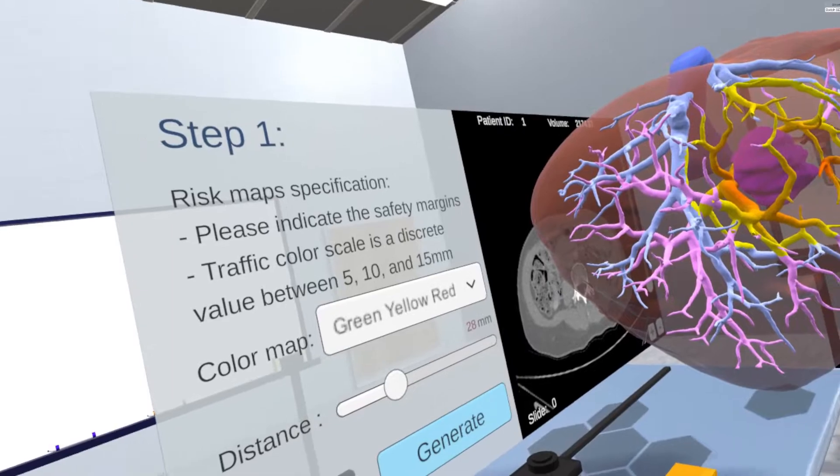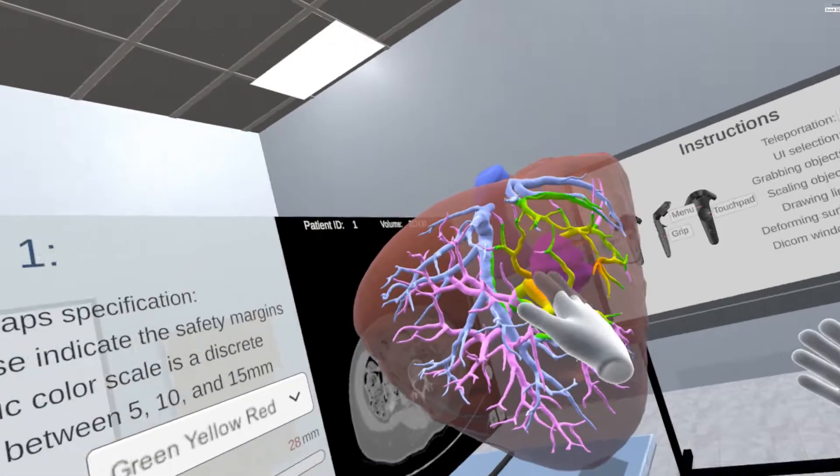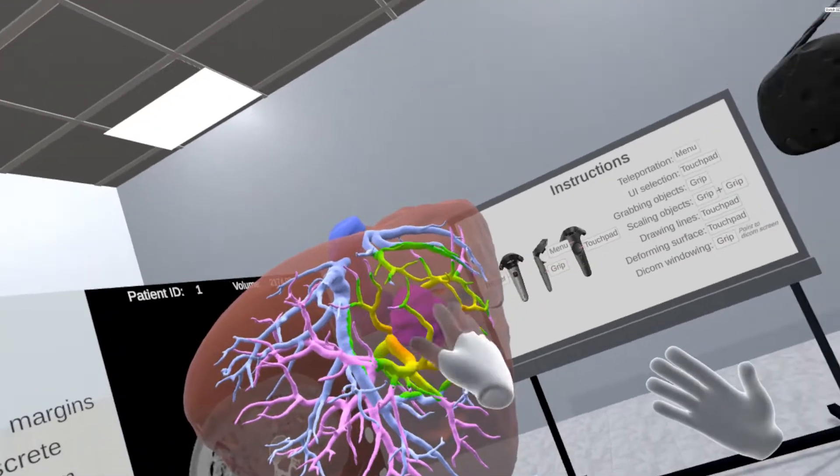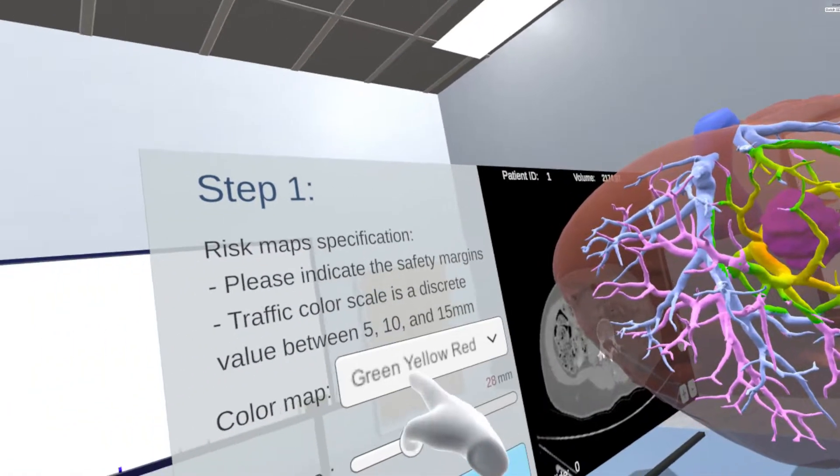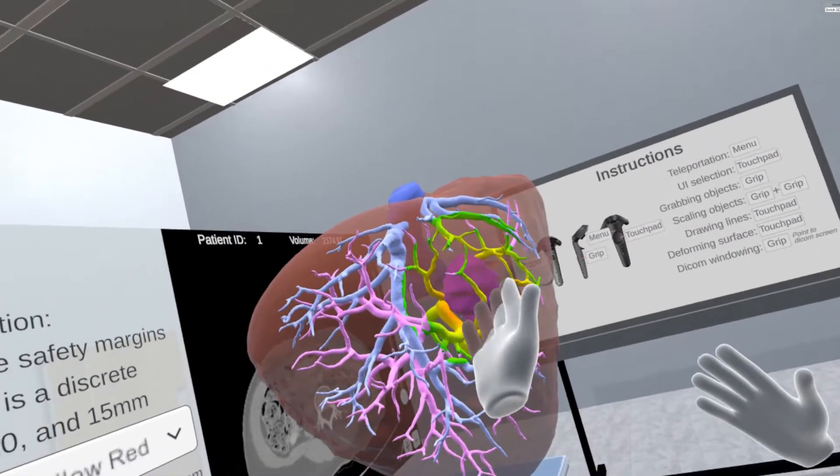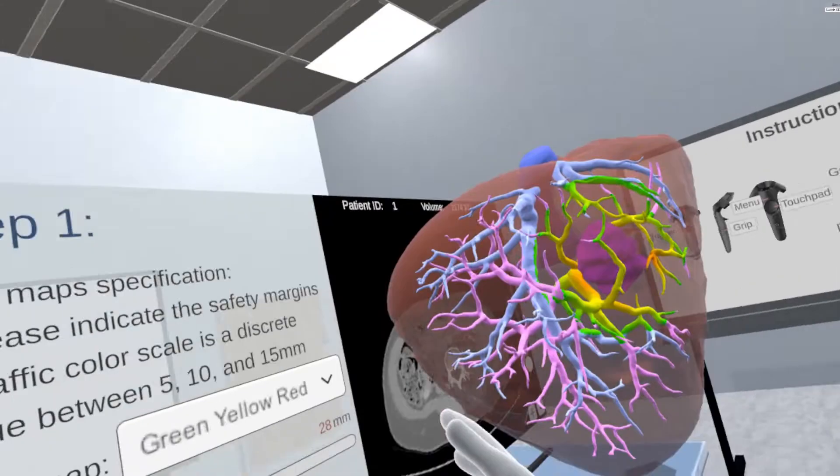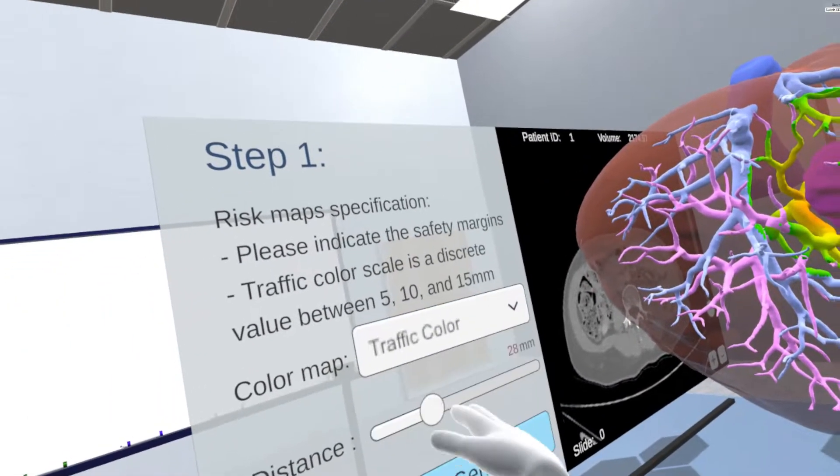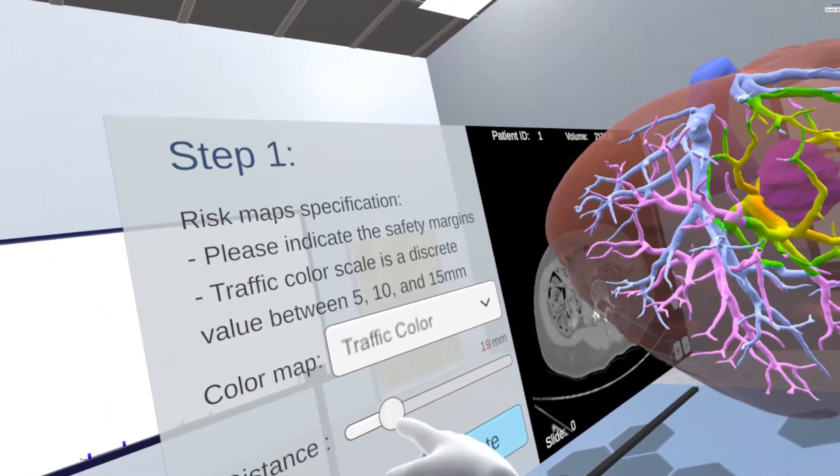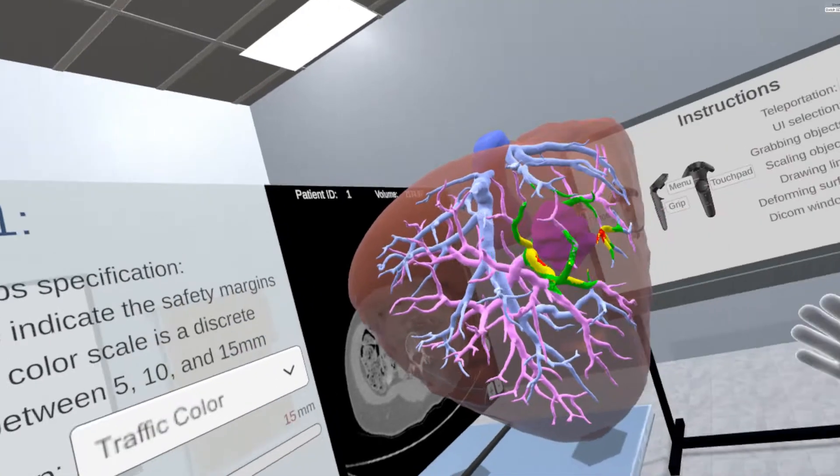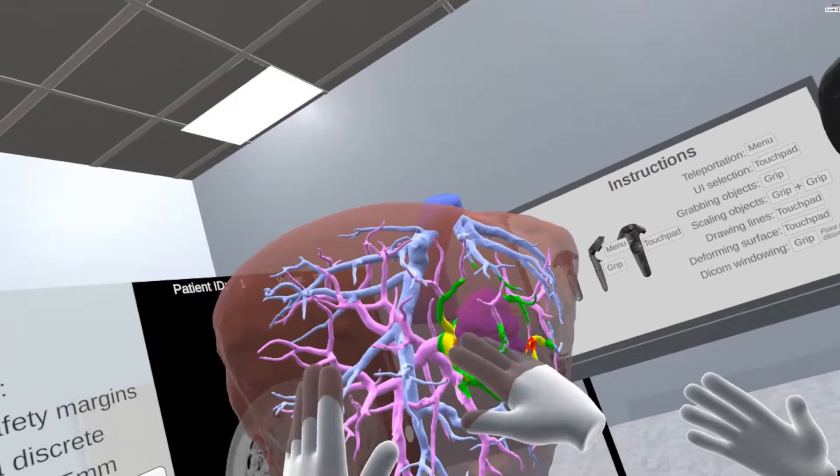Below 5 mm margins are indicated with red color which means it must be resected. The margin between 5 to 10 mm is visualized with yellow color, and between 10 to 15 mm is indicated with green color. The safety margins of more than 10 mm only add little value to the outcome, however, it is reasonable to consider them.